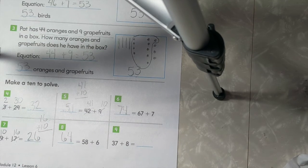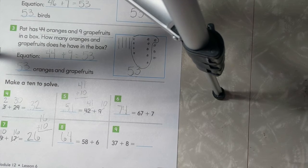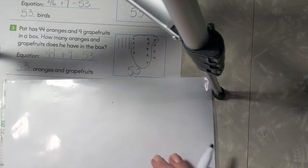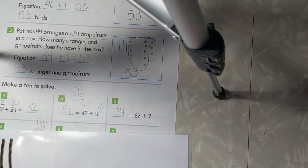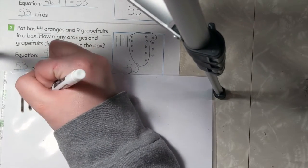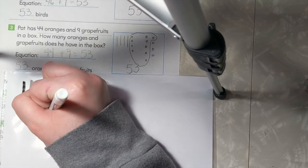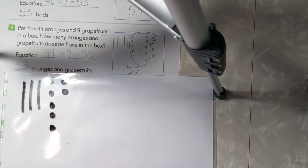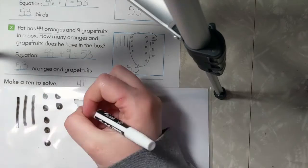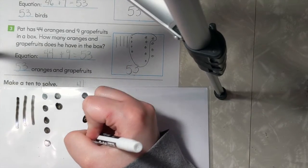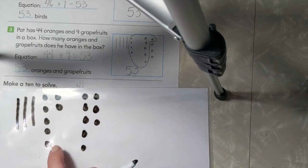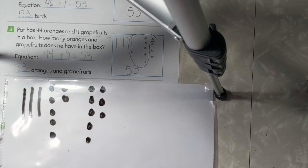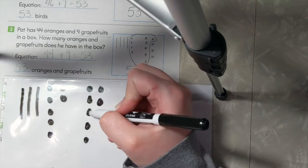Our last one on this side is 37 plus 8. Let's draw our three groups of 10: 1, 2, 3, and 1, 2, 3, 4, 5, 6, 7. Plus 8: 1, 2, 3, 4, 5, 6, 7, and 8. We'll count on to make our group of 10. So I have 7, 8, 9, 10.